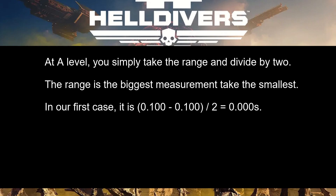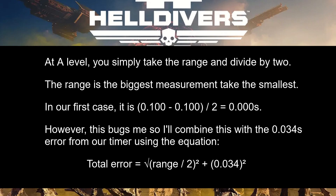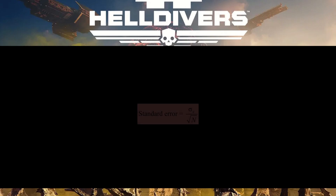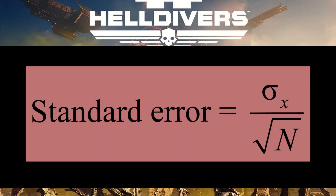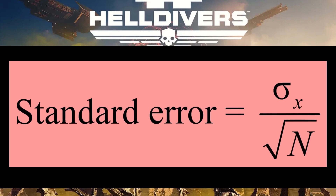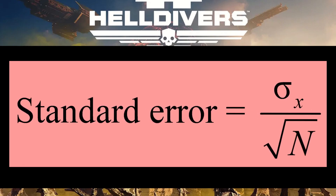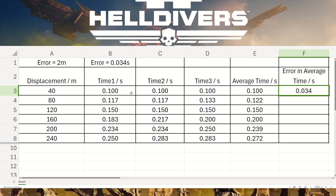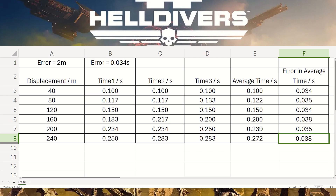In the first case, big minus small gives us 0.000 seconds error — but this bugs me because it tells me the uncertainty is 0.000, which isn't true. So I'm going to use a different formula here, which gives us the error in the average time to three decimal places.